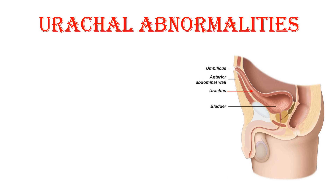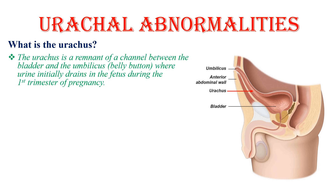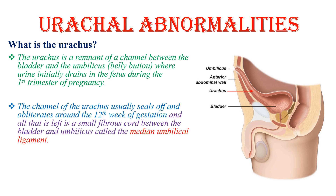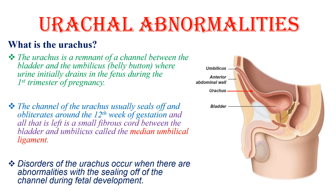Hello. In this lesson, I will discuss urachal abnormalities. The urachus is a remnant of a channel between the bladder and the umbilicus, where urine initially drains in the fetus during the first trimester of pregnancy. The channel of the urachus usually seals off and obliterates around the 12th week of gestation, and all that is left is a small fibrous cord between the bladder and the umbilicus, which is called the median umbilical ligament. Disorders of the urachus occur when there are abnormalities within the sealing of the channel during fetal development.